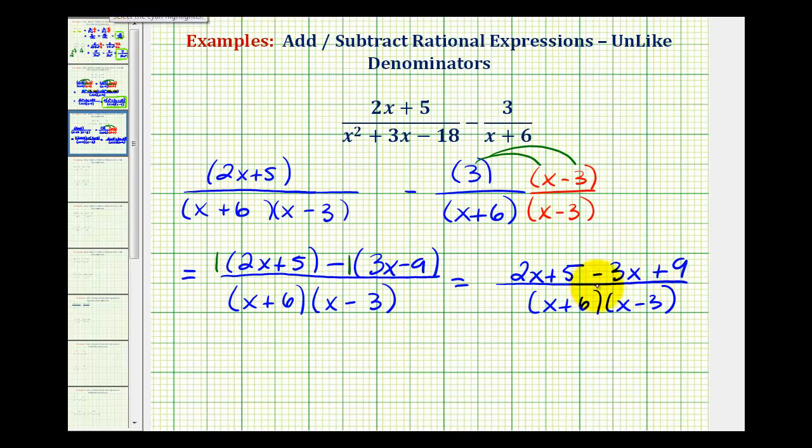And now we'll combine the like terms in the numerator. Here we have 2x minus 3x, and here we have 5 plus 9. So again, our denominator stays the same. Well, 2x minus 3x is going to be negative 1x or negative x, and then we have 5 plus 9, that's plus 14.